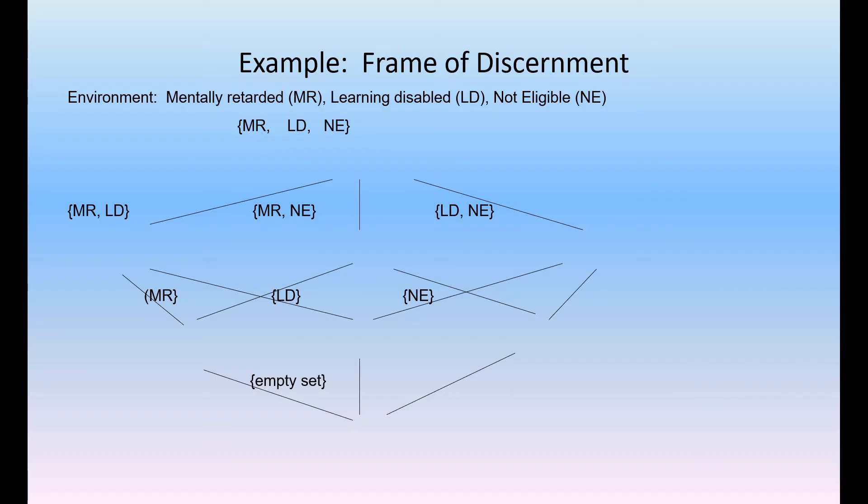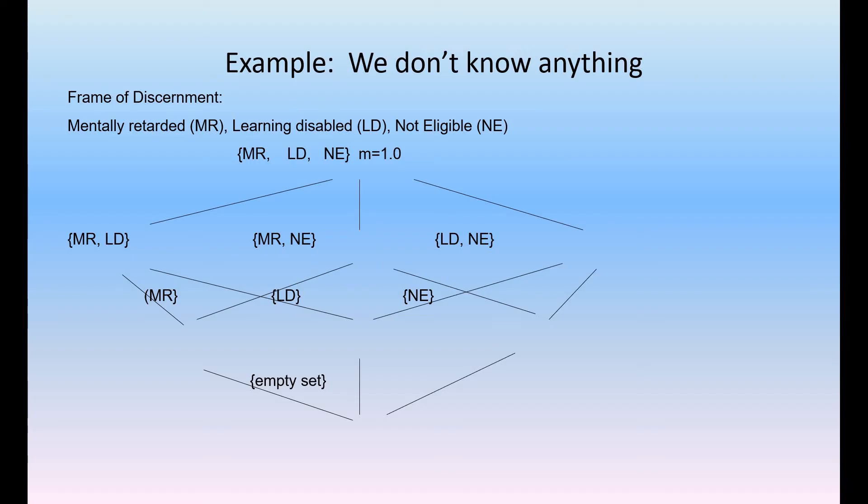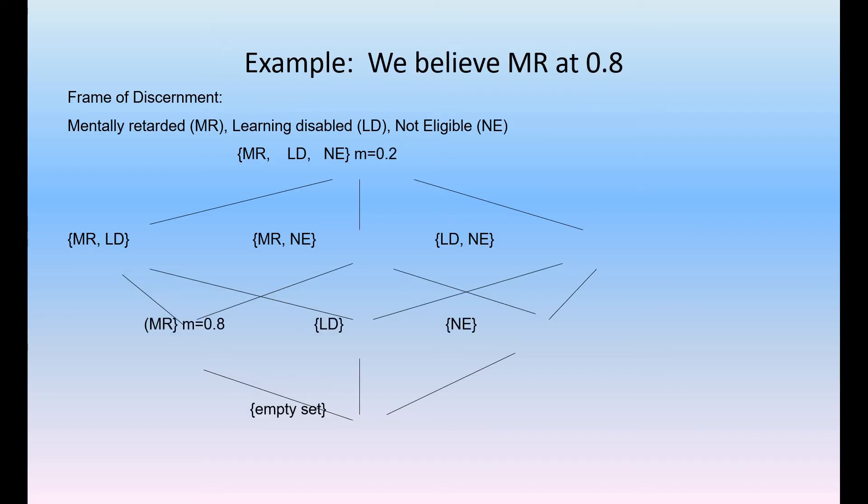Let's see in this diagram, it's a frame of discernment which is a power set of the given set of environment variables. The environment is mentally retarded MR, learning disabled LD, and not eligible NE. So MR, LD, NE is a power set described like this, and the environment with probability M equal to 1.0. Mentally retarded, learning disabled, and not eligible, all three, M is equal to 0.2. Here M is equal to 0.8.